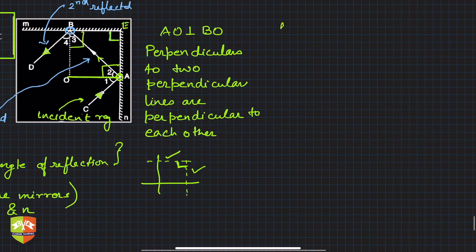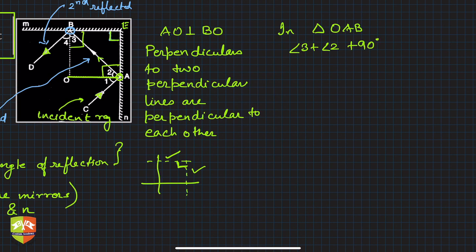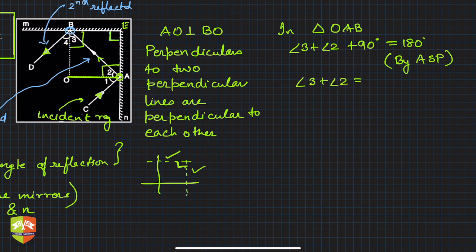In triangle OAB, by the angle sum property: angle 3 + angle 2 + 90° = 180°. Therefore, angle 3 + angle 2 = 90 degrees.